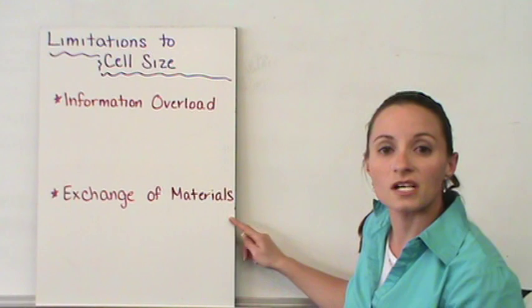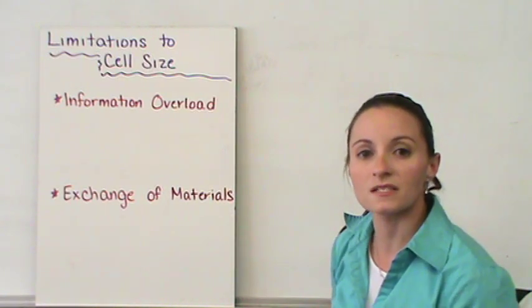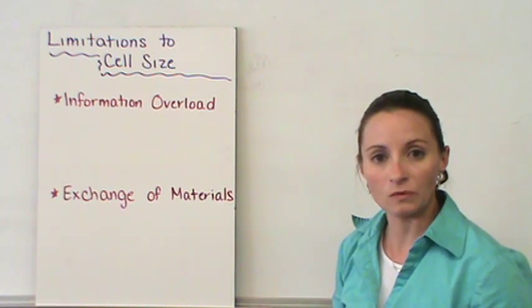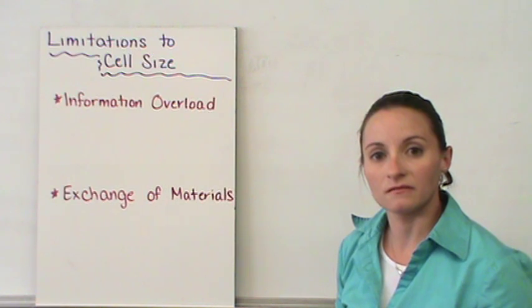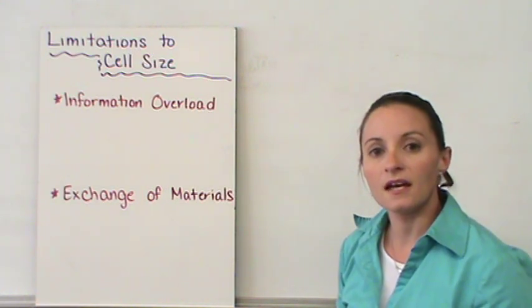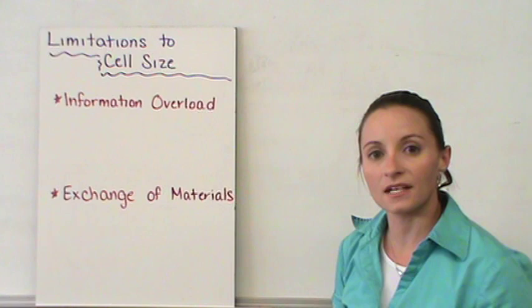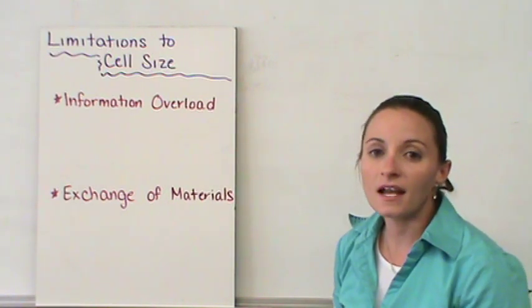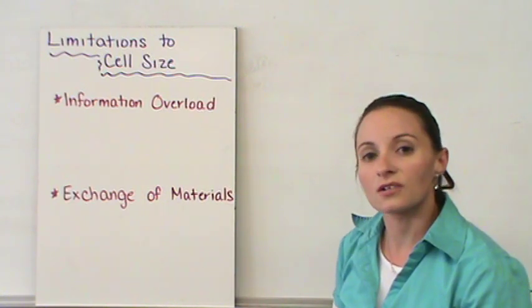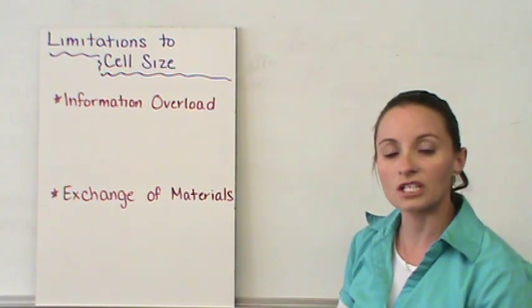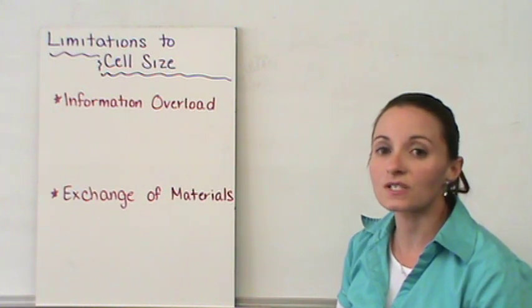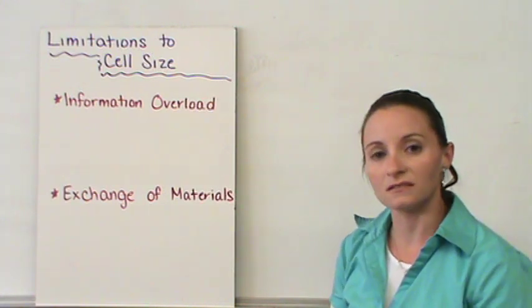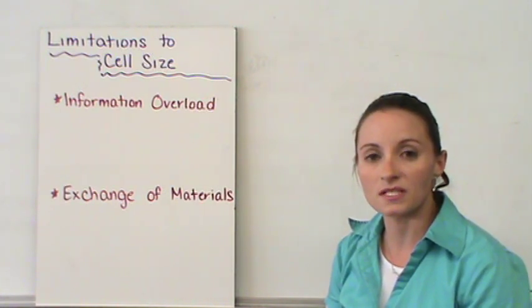The second limitation is the exchange of materials. If you think about the size of a city, the larger the city, the more roads you have in and out. If a city is growing very rapidly and you don't get the roads in and out that you need, you're going to end up with a lot of backup. That happens in cells also. Cells require a certain amount of nutrients for each amount of volume, and they produce a certain amount of waste. They have to get those materials in and out through the cell membrane.